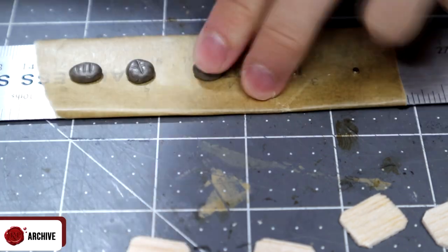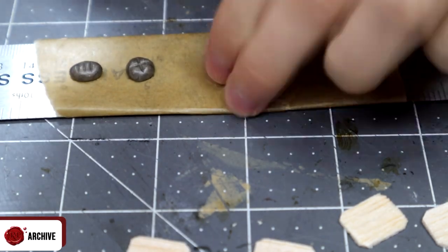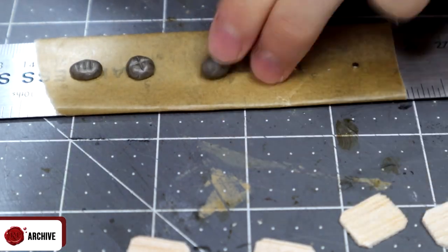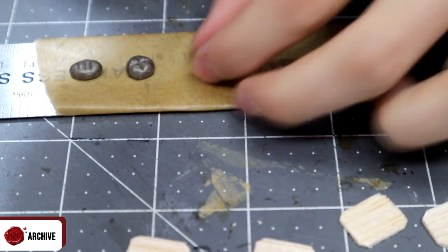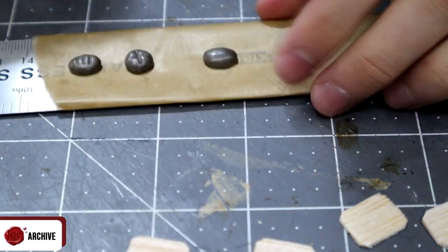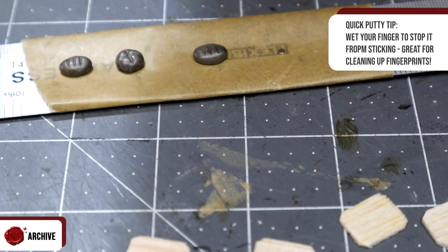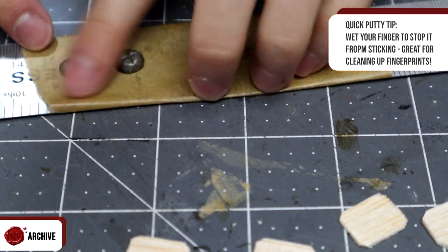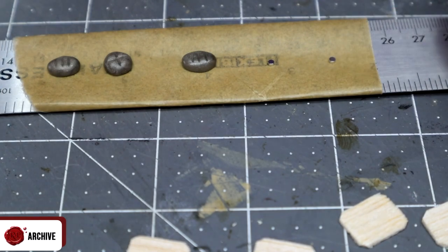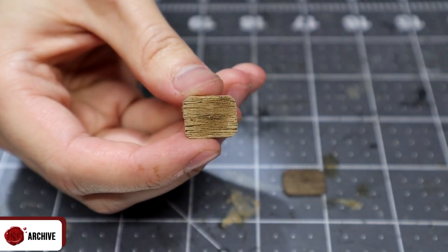You could absolutely use an x-acto knife for this. In fact, on some of them I actually did to see how well it would work. You might notice here I'm using a different kind of putty than green stuff. This is just brown stuff. It's similar, not quite the same, works very much the same. You could absolutely use green stuff for this. I was just experimenting. I left one of the pieces of bread plain and taller than the others. I had plans for this one. I left them all to cure and then went back to the wooden boards.